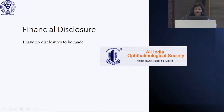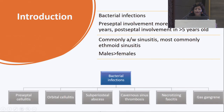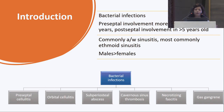I have no financial disclosure. Bacterial infections can involve preseptal tissue — more common in children under 5 years — and postseptal in children over 5 years. They are commonly associated with sinusitis, most often ethmoid sinusitis. Males are more affected than females. Classification includes preseptal cellulitis, orbital cellulitis, subperiosteal abscess, cavernous sinus thrombosis, necrotizing fasciitis, or gas gangrene.